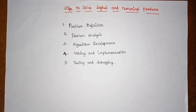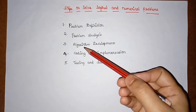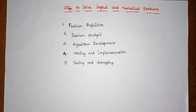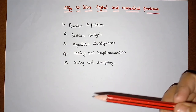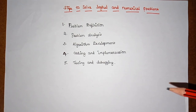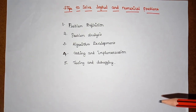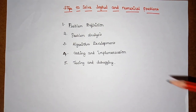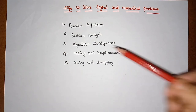In problem definition, we should define the problem statement — what the problem is and how the output should appear for that particular problem. The next step is problem analysis, where we determine the resources needed for solving the problem, such as what kind of variables are needed and what kind of functions are required.